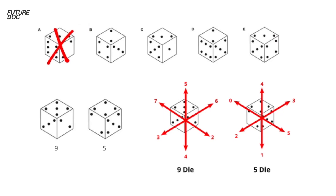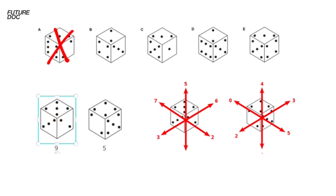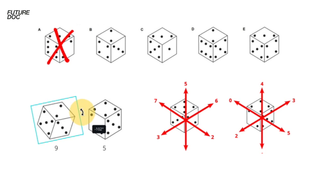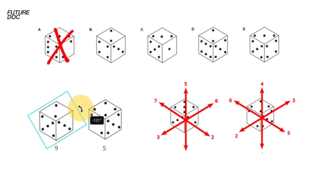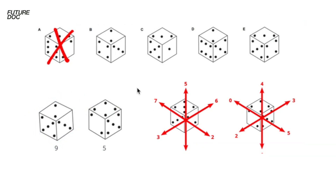Answer B is more tricky - we have to start using visualization, rotating this in our head to work out what's what. We can almost immediately say that it must belong to the nine die, because for the three to be part of the five die it would have to have a two on the opposing side. I can rotate it to show you what I'm doing in my head: if the three is there and the two is there, then this can't be the same die because then this would have to be a four and it's not. Therefore we can straight away rule that one out.